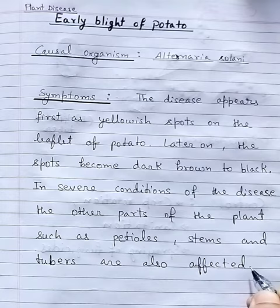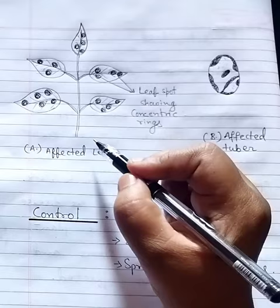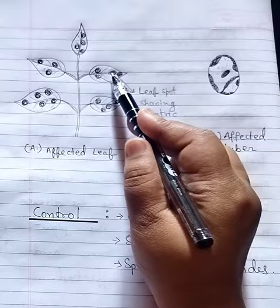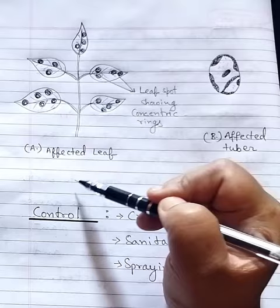This is the affected leaf. Here, leaf spots showing concentric rings, and diagram B is the affected tuber.